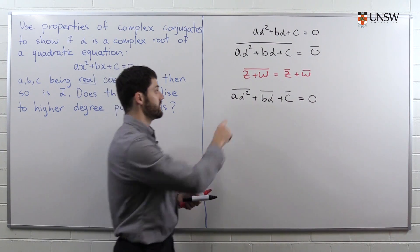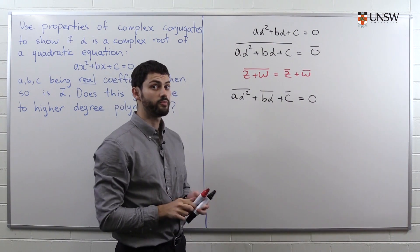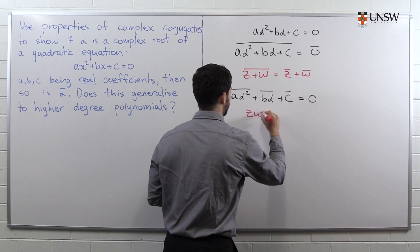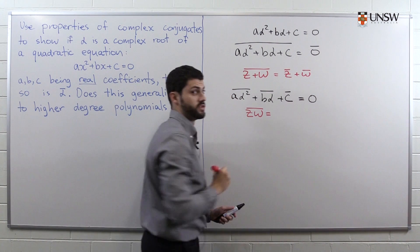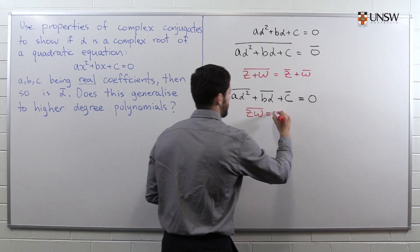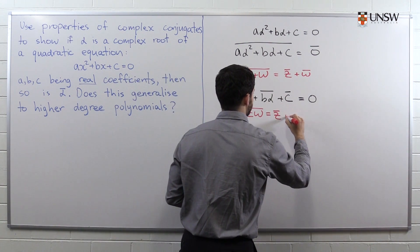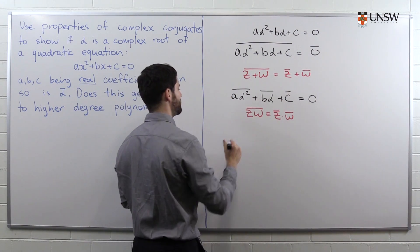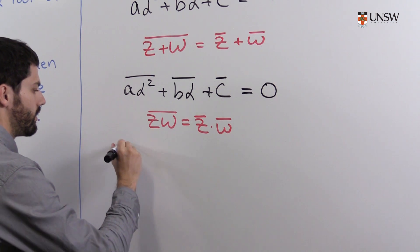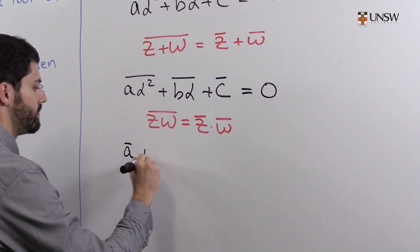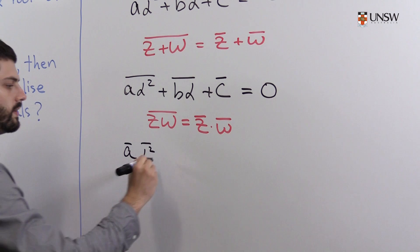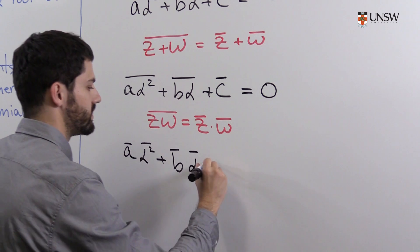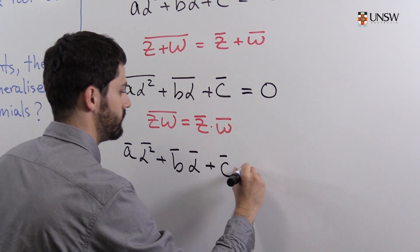Here we have a product of numbers, so we're going to use another property of complex conjugates: if we have a product of two complex numbers and we need to take the conjugate, we can just do it one at a time — first take the conjugates, then take the product. Applying this formula, we get the conjugate of a multiplied by the conjugate of alpha squared, plus the conjugate of b multiplied by the conjugate of alpha, plus the conjugate of c equals zero.